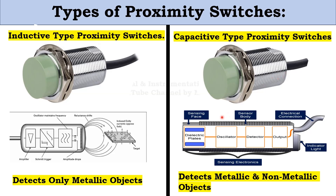In the Capacitive Type Proximity Switch, the working principle is a little different. It consists of two dielectric plates. Once a signal is received from the field, it detects the signal and sends it to the oscillator. The oscillator charges both plates — one with positive and the other with negative electrons. Air between the plates acts as a dielectric medium. When any object like a glass of water or metal is brought near, the dielectric changes and the two plates become shorted, changing the current, which is detected by the sensor and sends output to the PLC.